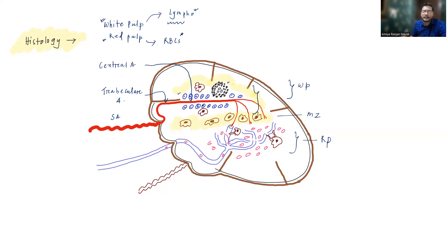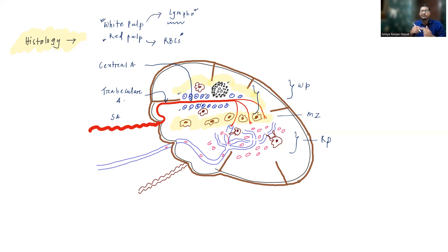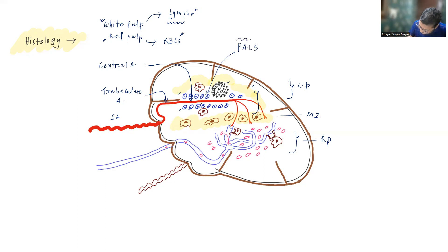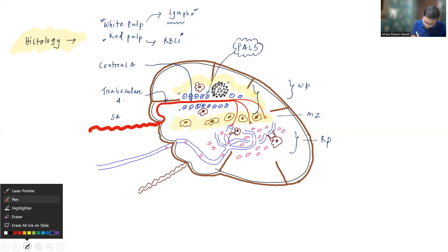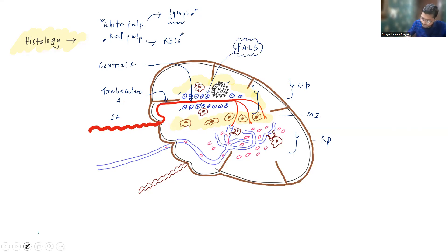The artery is known as the central artery because surrounding it you can find a lymphoid sheath. These are all lymphocytes surrounding the central artery, and this is known as the peri-arteriolar lymphoid sheath (PALS). You have to remember that this peri-arteriolar lymphoid sheath is made up of T lymphocytes.